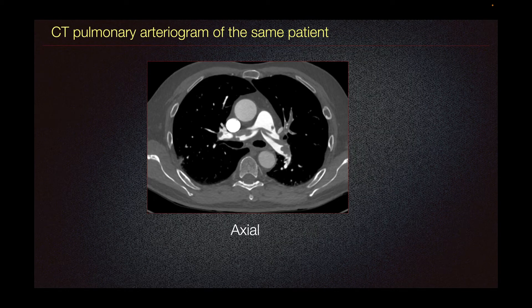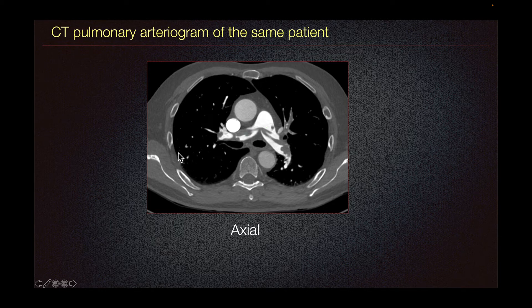The patient in this case underwent CT demonstrating a saddle pulmonary embolism. Saddle pulmonary embolism is a large PE straddling the main pulmonary arterial bifurcation. There is a small rounded opacity in the periphery, which is not well depicted on the radiograph, and this is consistent with a developing pulmonary infarct.